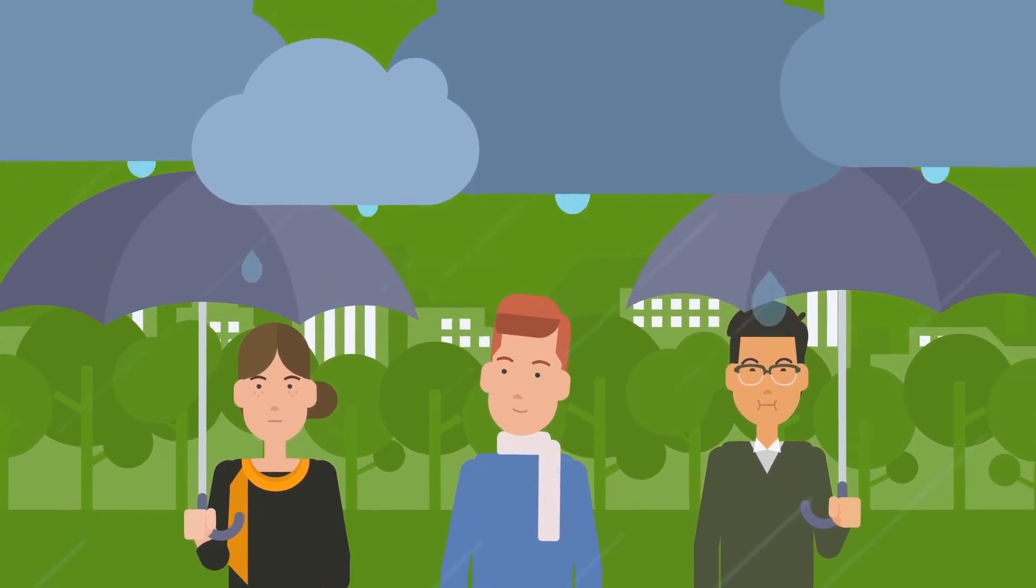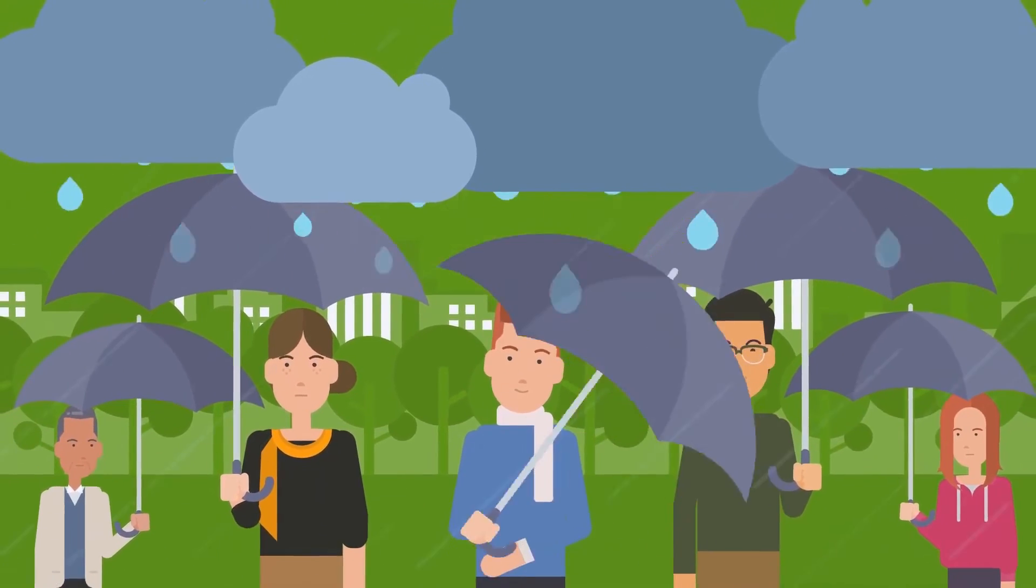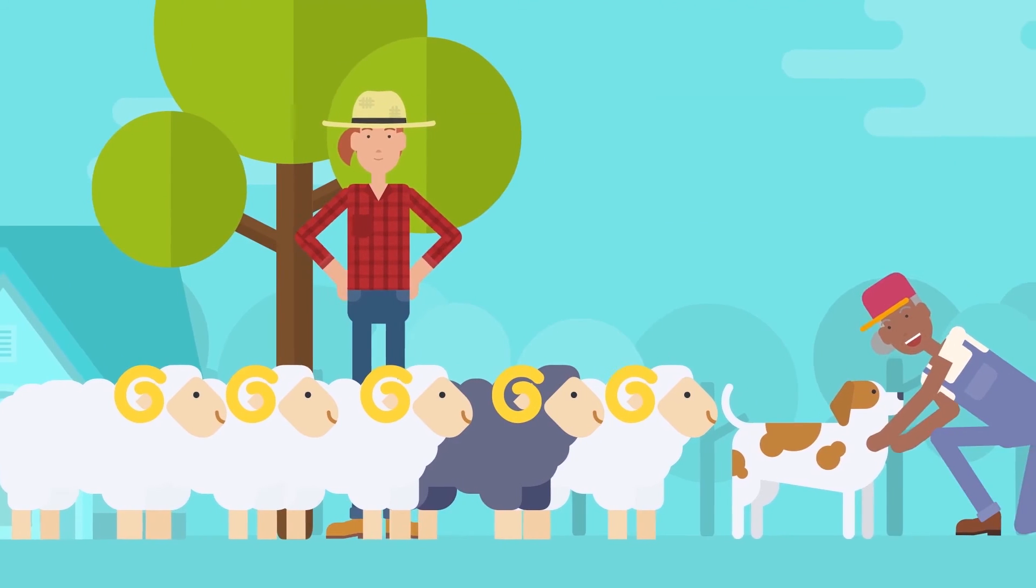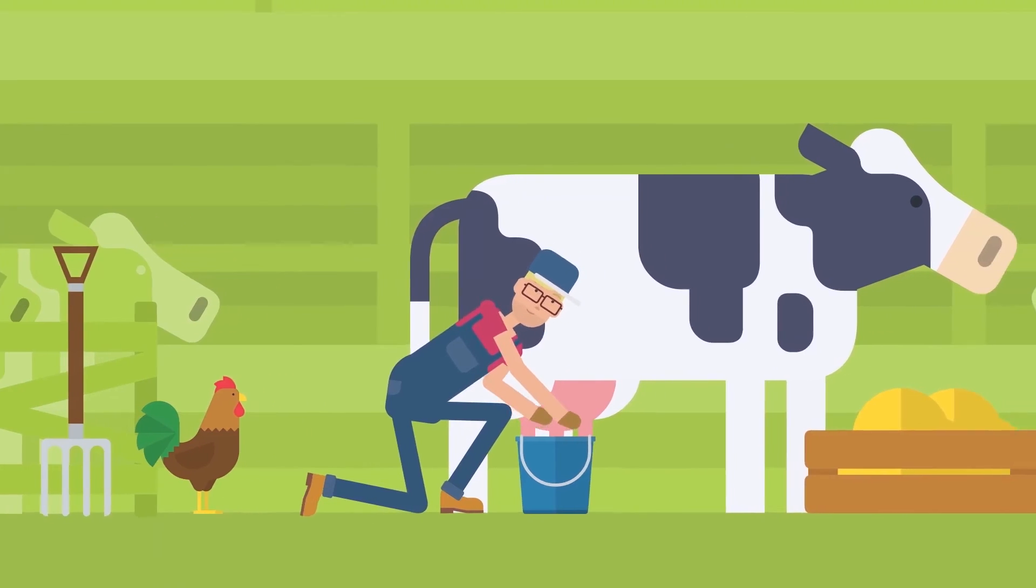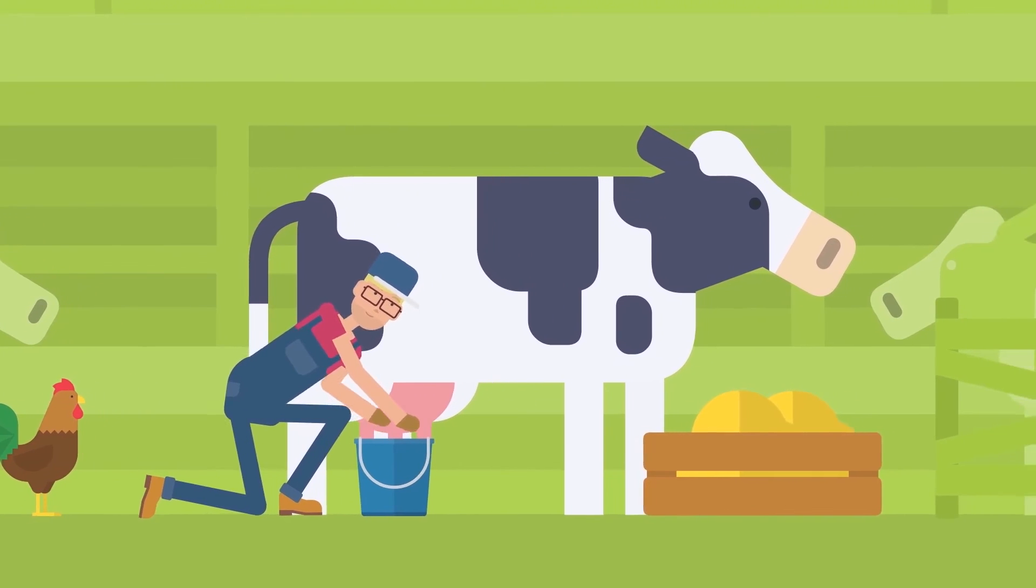Acid rain is a product of human irresponsibility to future generations, and only a careful attitude to nature can save our descendants from such an unpleasant phenomenon.